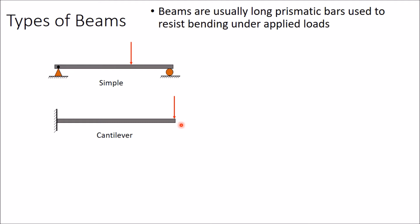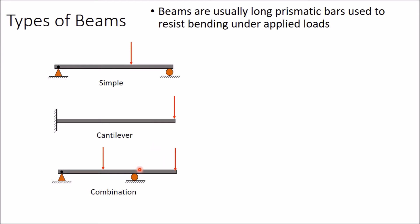In its entire length you can apply different types of load. Here one point load is applied at the end of the cantilever beam. Third beam is a combination of these two — in between it acts as a simply supported beam and after this portion it acts as a cantilever beam. This type of beam is also called an overhanging beam, where this part overhangs on one side.